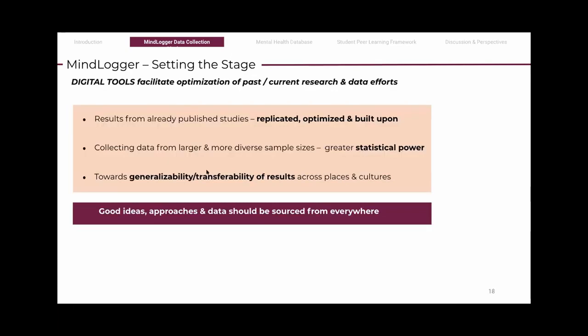From the researcher's point of view, results from already published studies can be replicated, optimized and built upon, collecting data from larger and more diverse sample sizes towards generalizability or the transferability of results across places and cultures. Good ideas, approaches and data should be sourced from everywhere, including Southeast Asia, Africa and Latin America, if we have to progress in mental health.